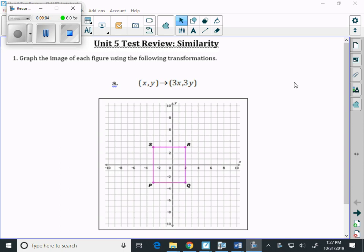Graph the image of each figure using the following transformations. Well, let's look at what our ordered pairs are for each of these figures.